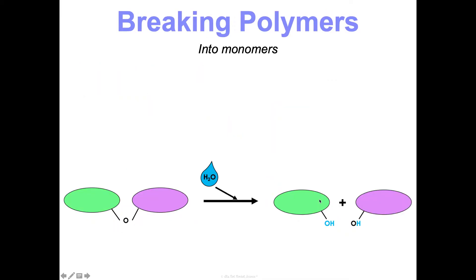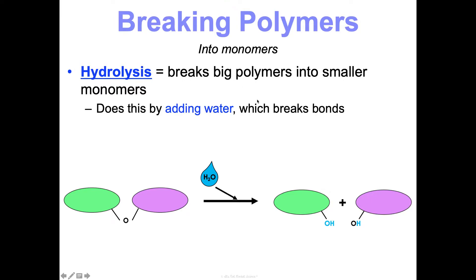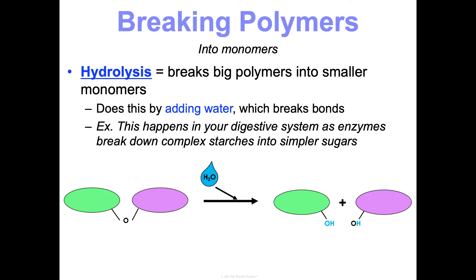If we want to break polymers up into monomers, we do a hydrolysis reaction. Hydro means water; lysis means to split or break apart. So we break big polymers into smaller monomers by adding water, which breaks the bond. One example is in your digestive system, where enzymes break down complex starches into simpler sugars by adding water.